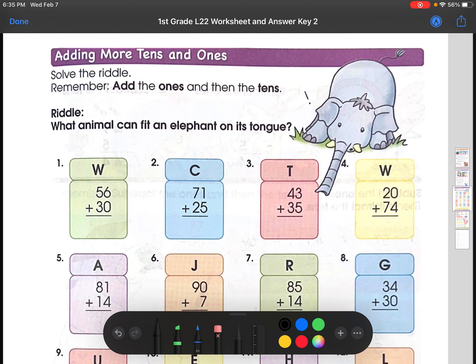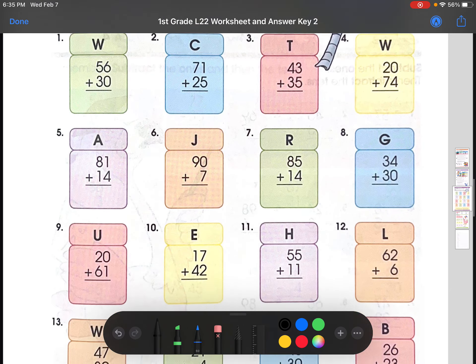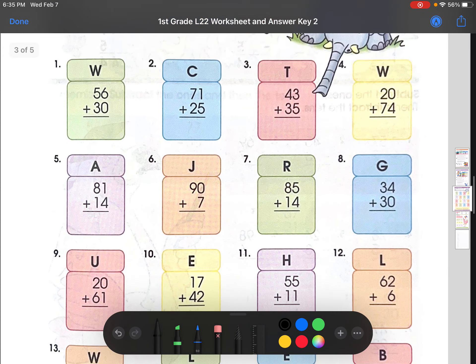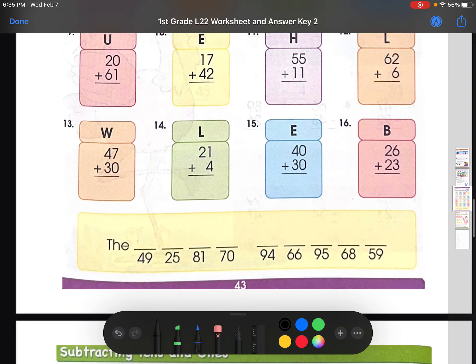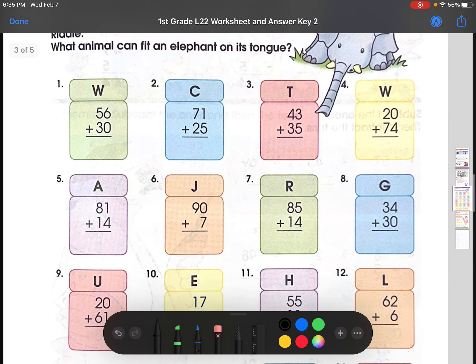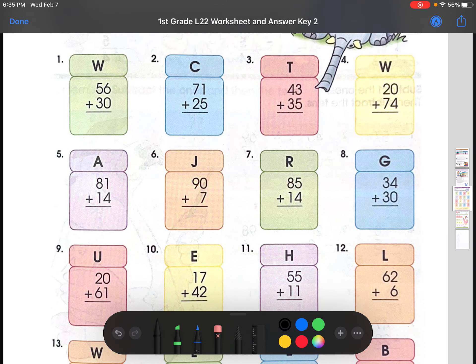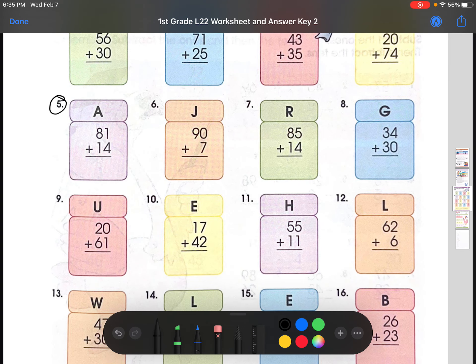Adding more 10s and 1s. So I'll just have to solve the riddle. The riddle is which animal can fit an elephant on its tongue. So in order to solve this, you guys would have to basically solve all these problems out. And then whatever the answer is, we'll go and fill in this blank. So let's just pick a random one. Let's do number 5. 81 plus 14. So we learned that vertical addition means you just do the 1s place and then the 10s place. So first, let's do the 1s place. 1 plus 4 is 5. And then we would do the 10s place like so. And 8 plus 1 is 9. So the answer to A is 95.